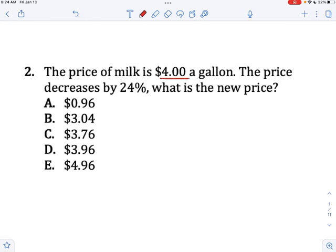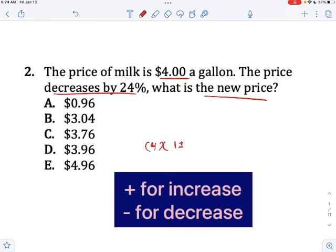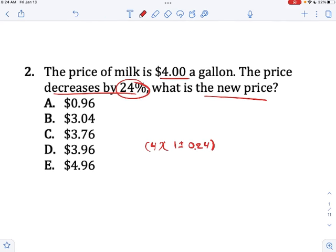The price of milk is $4 a gallon. The price decreases by 24%. So what's the new price? With these, all you do is you take your original value, multiply by 1 plus or minus the percent expressed as a decimal, which in this case is 0.24. If you do that, you end up getting 3.04 as your answer. Very straightforward.